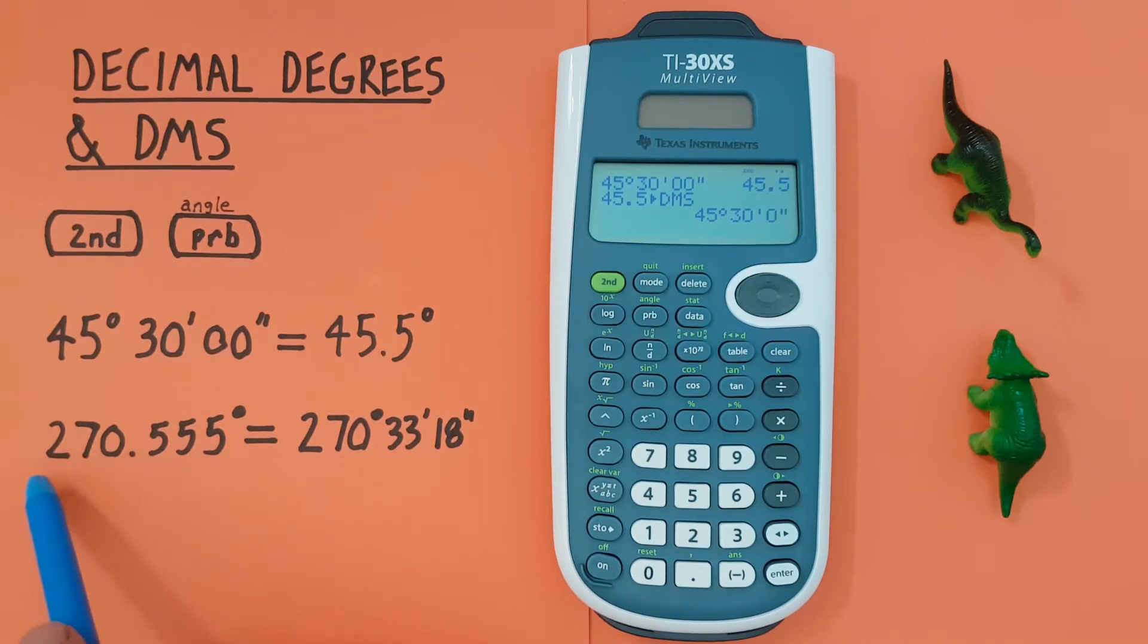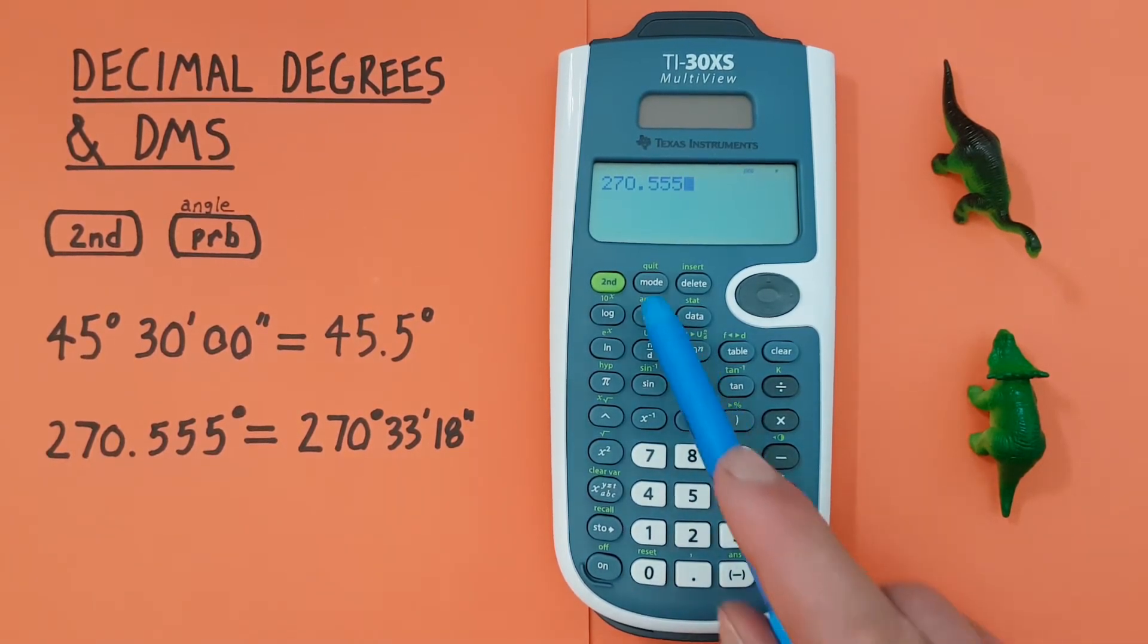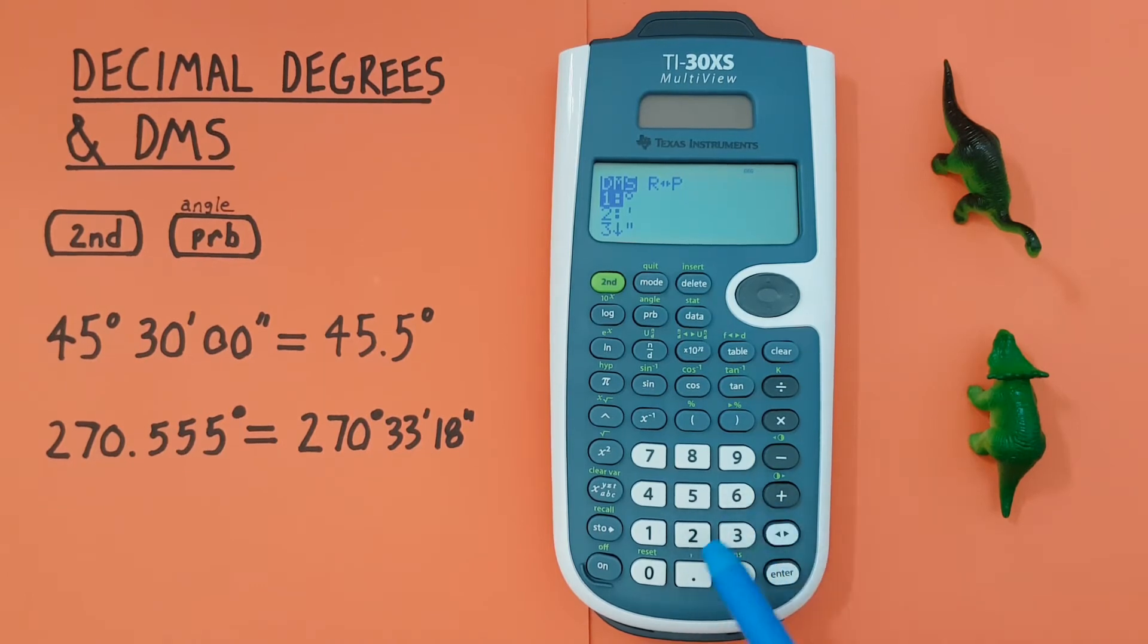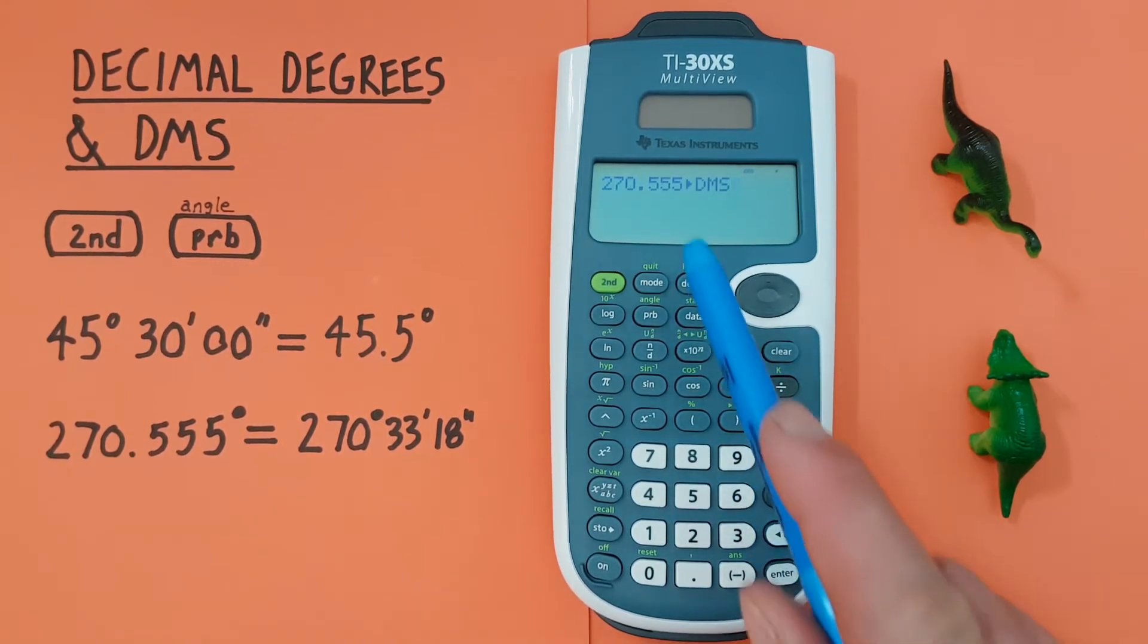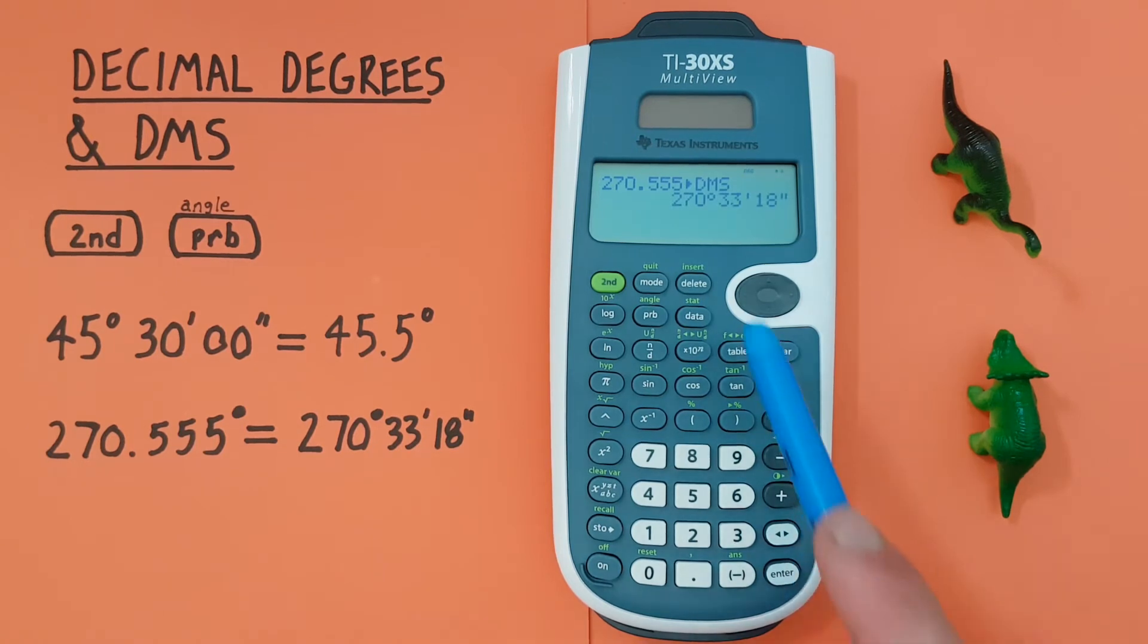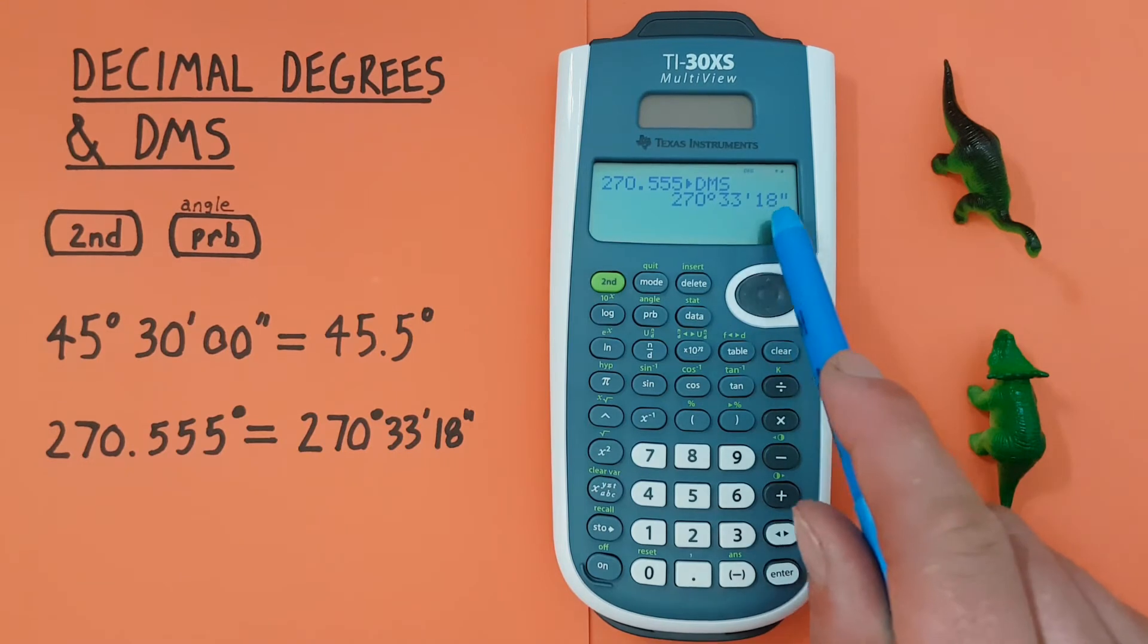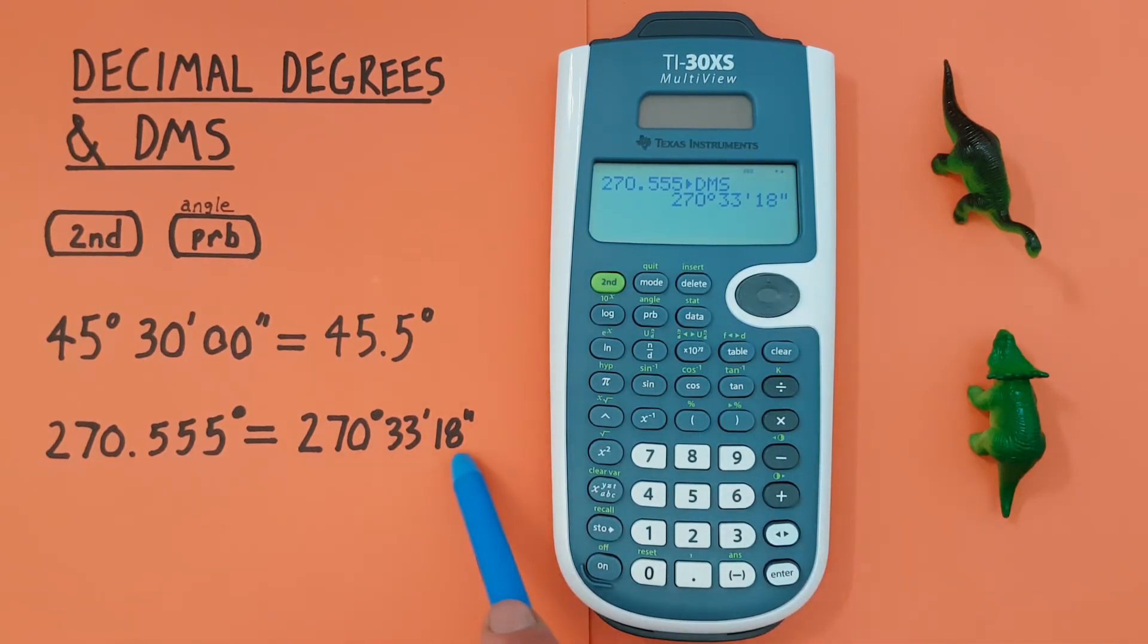Another example, let's say we were given 270.555 degrees and wanted to get the degrees, minutes, seconds out of that. Well again we just enter our degrees on there, back to our menu and if we remember back the sixth option was the into DMS so we can just press six, there we go, press enter again and we see that's equal to 270 degrees 33 minutes 18 seconds which is correct.